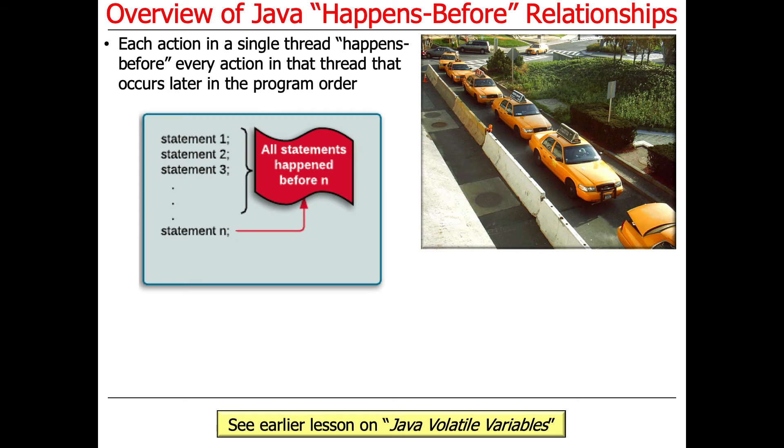So let's start with the baseline. Every action in a single thread, if you just have one thread in your program, then that necessarily happens before the next operation. I think that's pretty clear. It's kind of like if you had a taxi stand or if you had a drive-through window at a fast food restaurant, the order that is for the car ahead of you in line happens before your order, right?